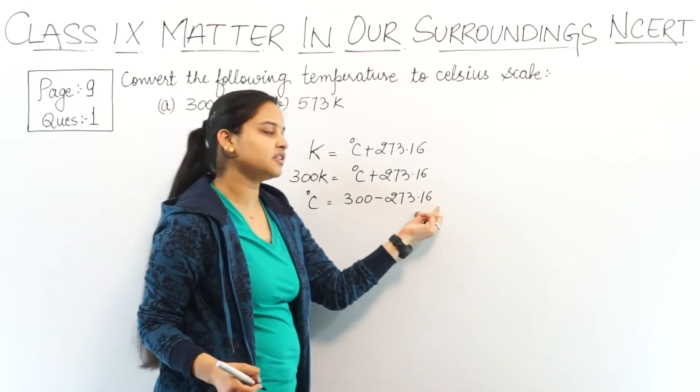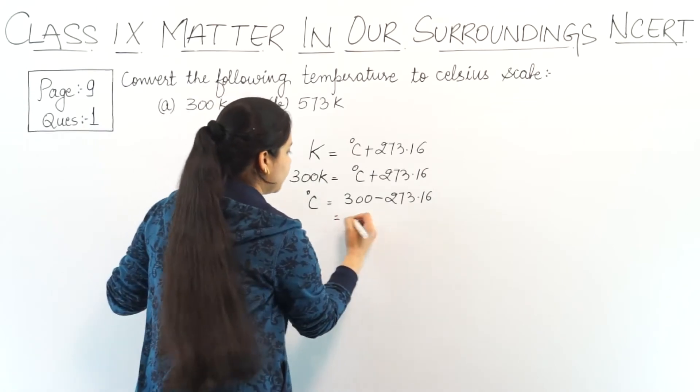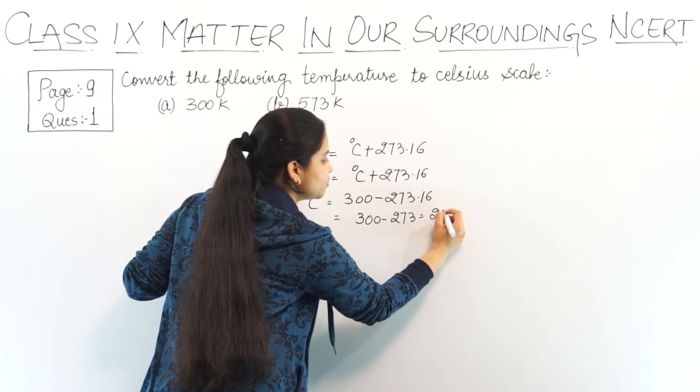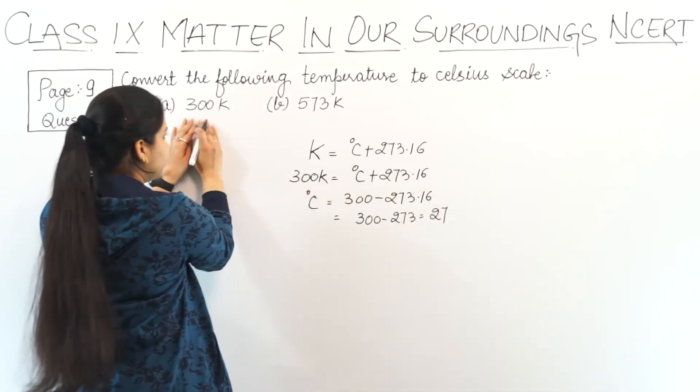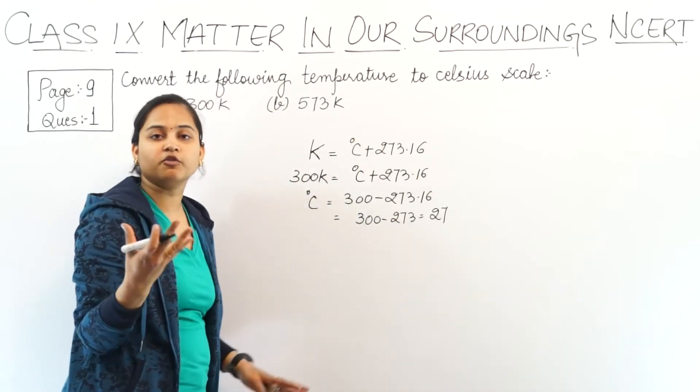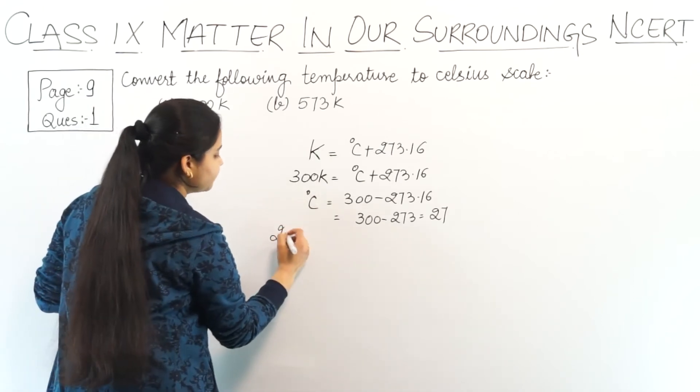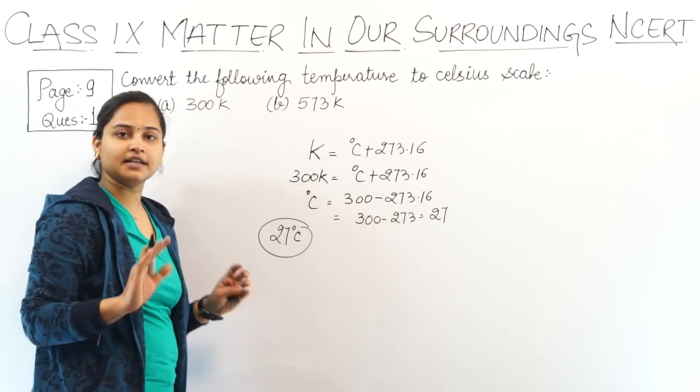So it would be 300 minus 273.16. The 0.16 is very negligible, so I can ignore this part. It becomes 300 minus 273 which equals 27. So if I have 300 Kelvin and change it to degree Celsius, it would be 27 degrees Celsius. Is it clear to all of you?